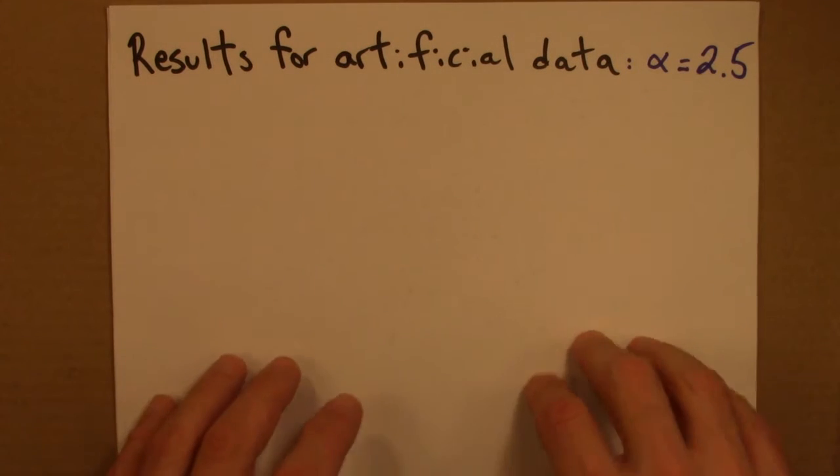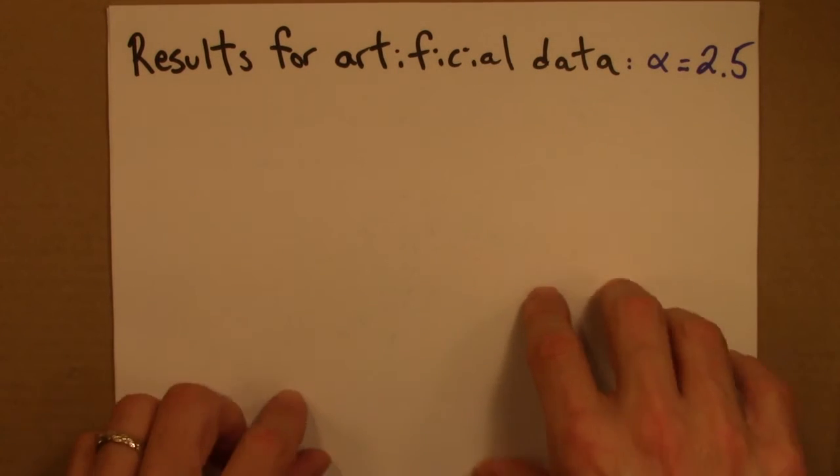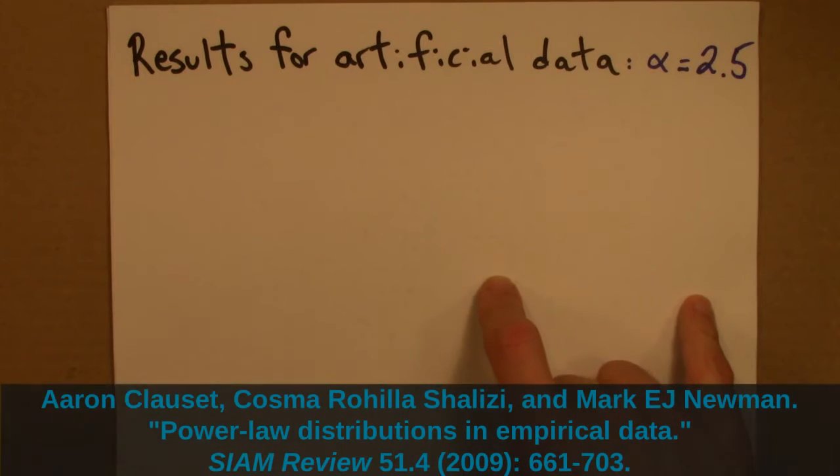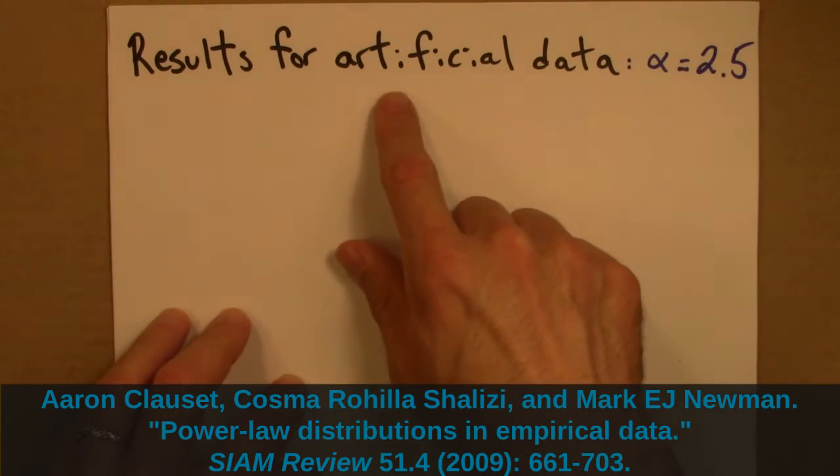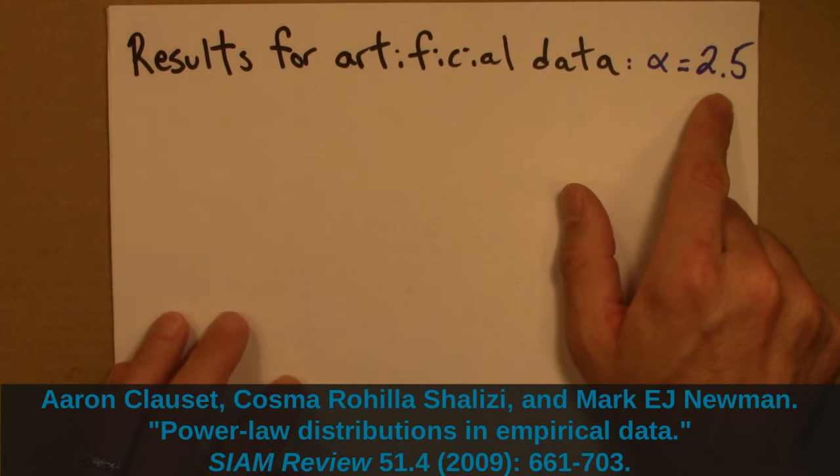How does it work? So what I want to do now is present results again from the Closet, Chilesi, and Newman paper. This is table 2 from that. And what they did was they generated artificial data for alpha equals 2.5. And they did that for both continuous and the discrete case.